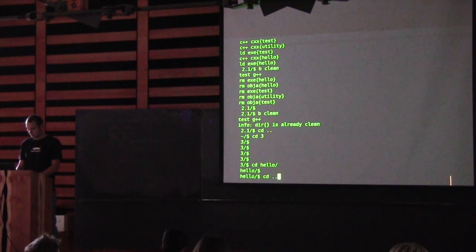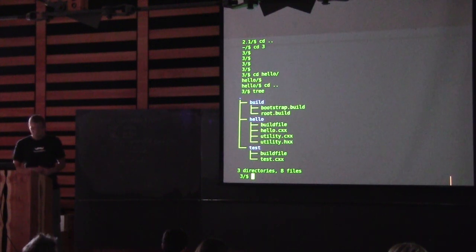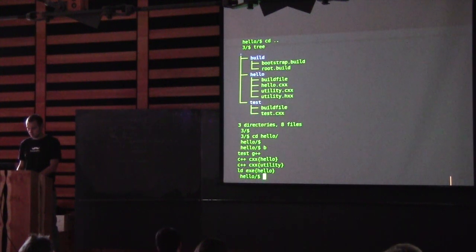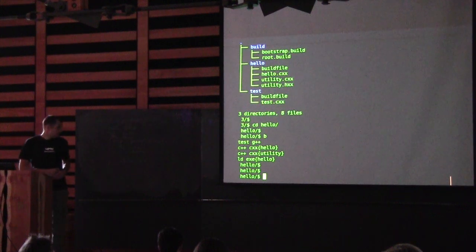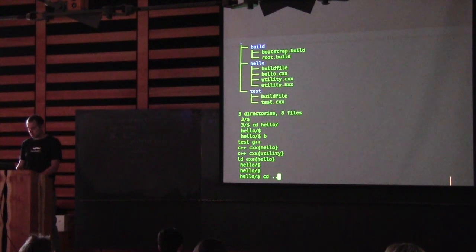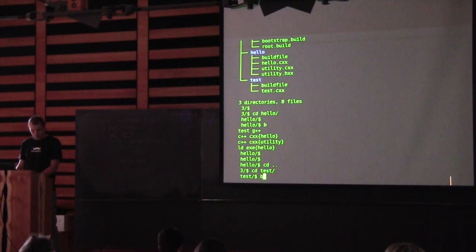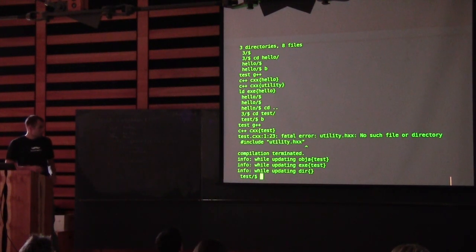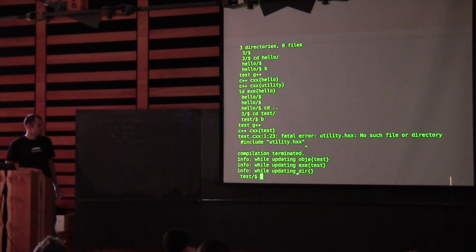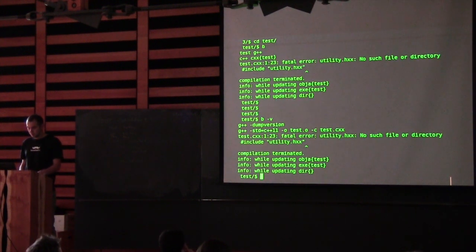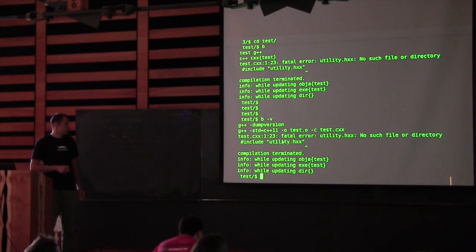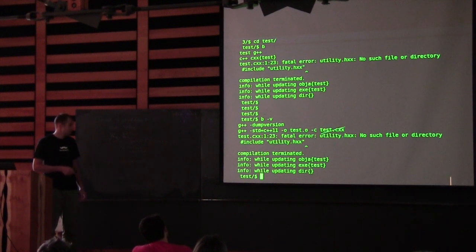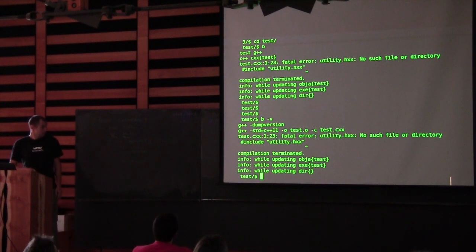Let's go take a look. We build from the hello subdirectory and it works — the application is built. Then we go to the test directory and try to build — something didn't go well. Build prints a nice stack trace telling you exactly what it's trying to update and the chain of updates where you get the error. Running it again in verbose mode shows the problem: we include utility in quotes, but there's no utility file in this directory — it's in the hello directory — and we have no dash-I preprocessor option.